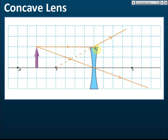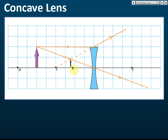Students sometimes don't know where to draw the refracted ray — always draw it at the center of the lens. The third ray comes from the direction of the principal focus. Extend the rays backwards and at the point of intersection is the image. The image formed here is smaller, upright, and virtual — virtual because it is on the same side as the object.